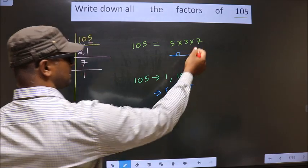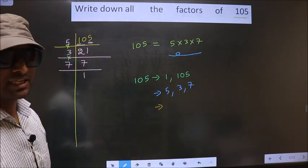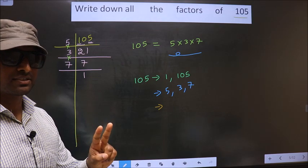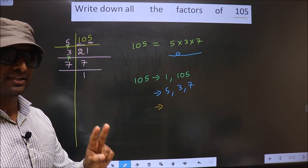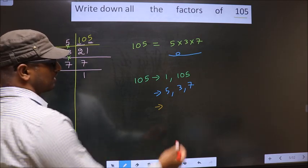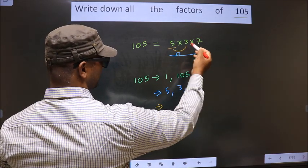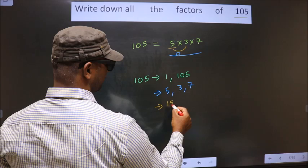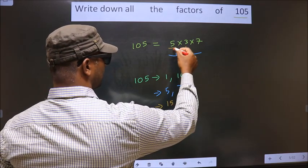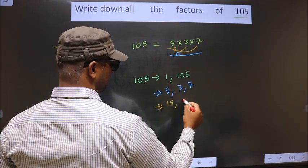Now from these numbers, you select a combination of 2 numbers. How do we do that? See, first you fix 5, you combine with 3. 5 into 3 is 15. Now I combine with 7. 5 into 7 is 35.